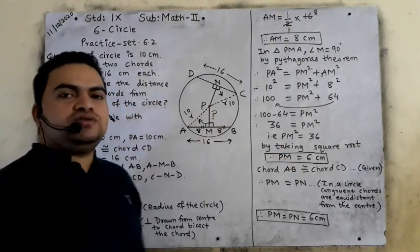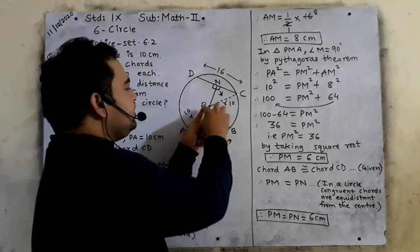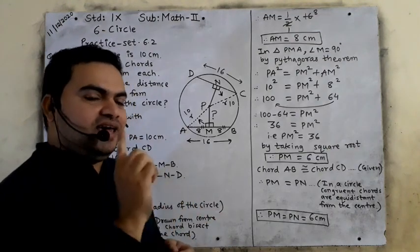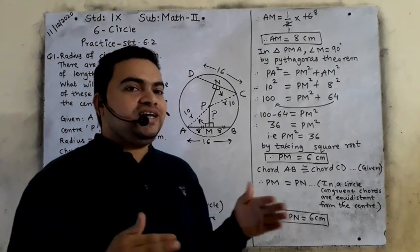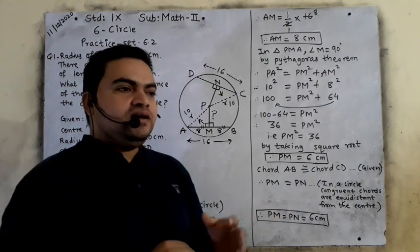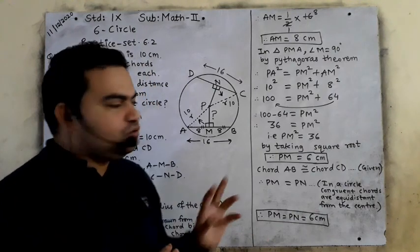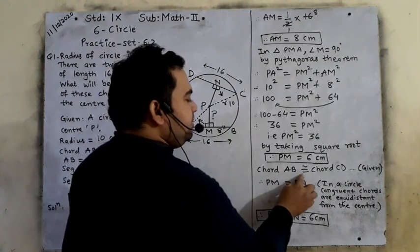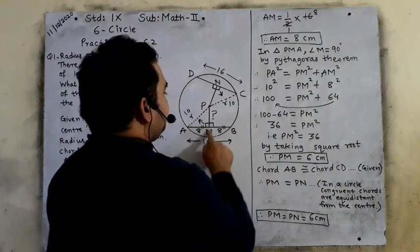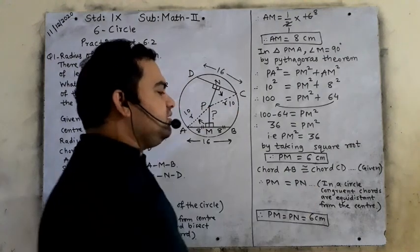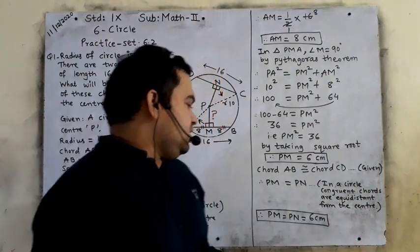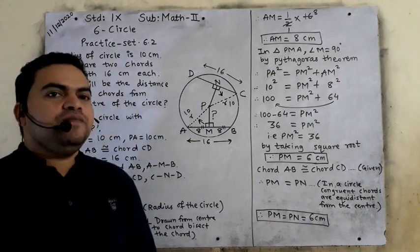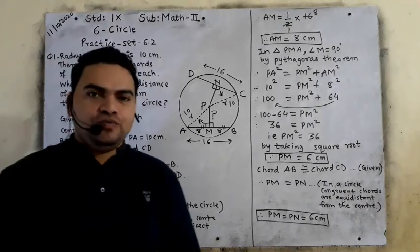We came to know that PM equals 6 cm. Similarly, PM equals PN, because in a circle, if two chords are congruent they will be at equal distance from the center. Since chord AB is congruent to chord CD, therefore PM equals PN equals 6 cm. This is how you solve practice set 6.2 question number 1.